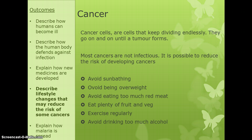Cancer cells are cells that just keep dividing forever, regardless of how much food or resources are available — they never stop. Normal cells reach a point where they stop dividing; cancer cells don't, and that's what makes them cancerous. It's those growths that form the tumours we see. Most cancers aren't infectious, though there are some you can get from specific types of virus, but we'll mostly ignore those for the exam.